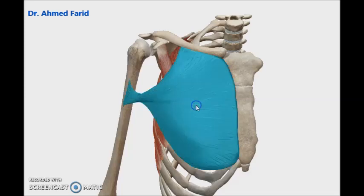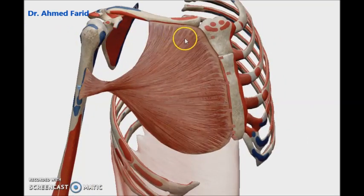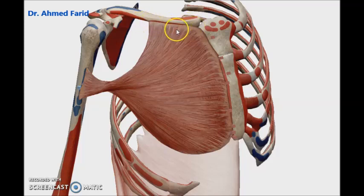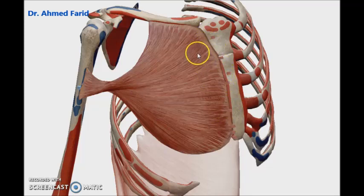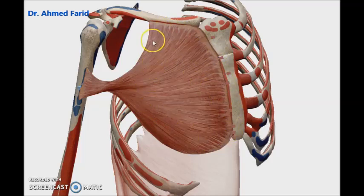Now we will discuss every muscle in the pectoral region regarding attachments and action. This is called pectoralis major — as you see it has a clavicular head and a sternocostal head going to be inserted into the humerus. The origin of pectoralis major: the clavicular head is from the front of the medial half of the clavicle, and the sternocostal head is from the front of the sternum, manubrium sterni, and upper six costal cartilages.